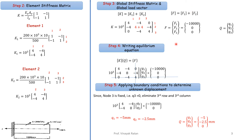The global force vector is [F1, F2, F3]. Since there are only point loads and no distributed loads, F2 = 0 and F3 = 0. At node 1 the load is -10,000 N — negative because the direction of x is to the left but the force is to the right. The global displacement vector is [q1, q2, q3]. The equilibrium equation is K·q = F.